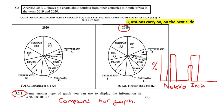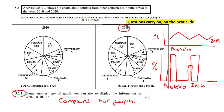You could also use a line graph. For example, you would have Australia on the x-axis with your percentages on the y-axis, with one line for 2019 and another line for 2020.